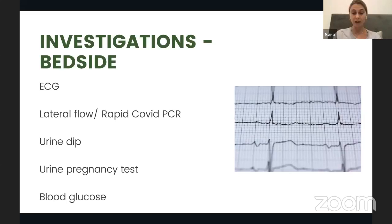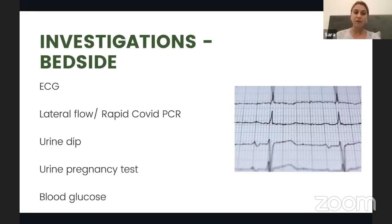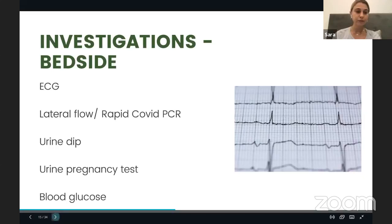The urine pregnancy test is very important in females, because it will change our management entirely — whether it's an ectopic or regular pregnancy causing symptoms. We also need to know before giving medications like antibiotics or ordering certain scans. Blood glucose is important for two reasons: the patient may be hypoglycaemic due to vomiting and inability to eat, or hyperglycaemic due to DKA — an important differential that will guide our management.